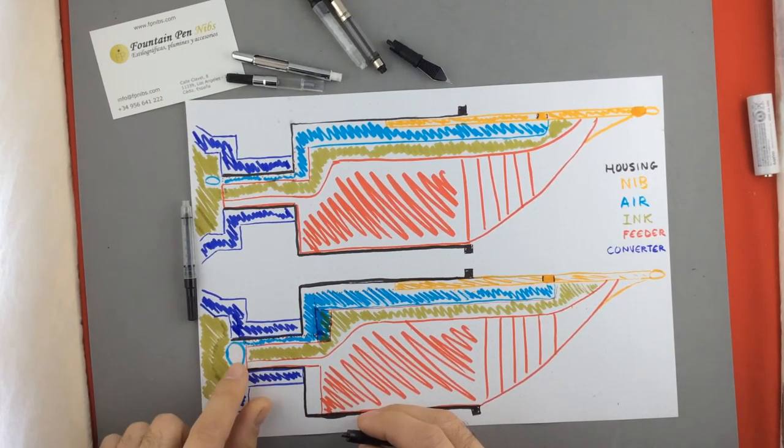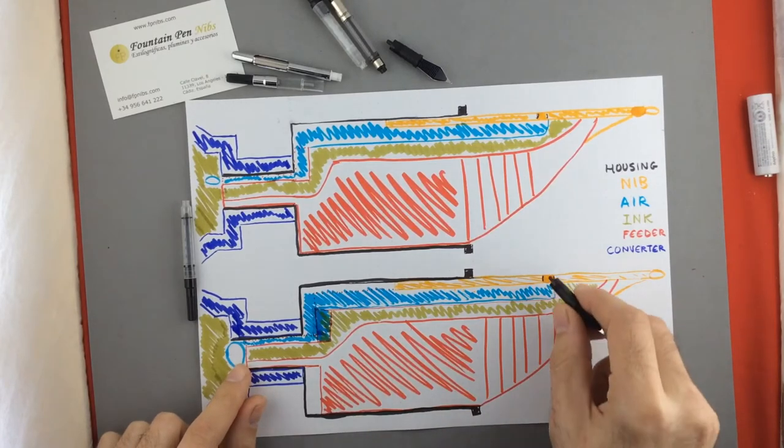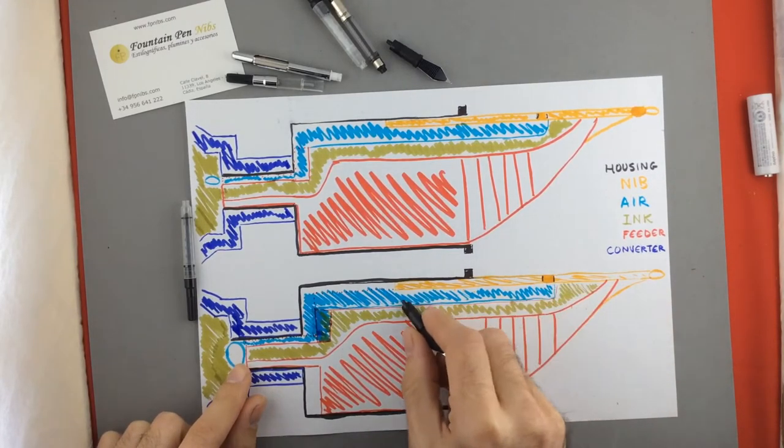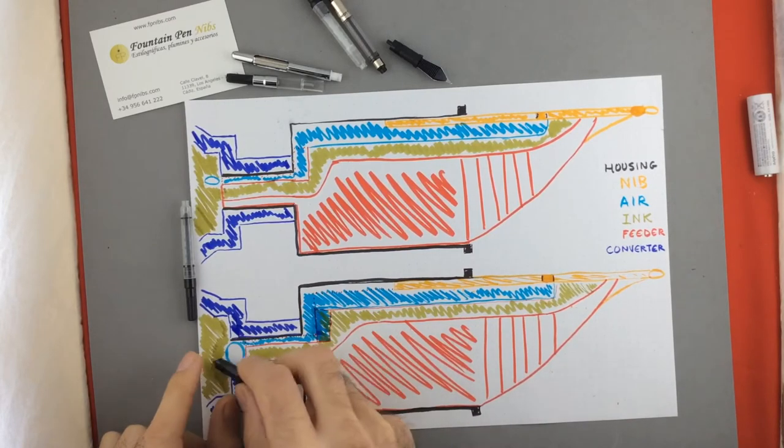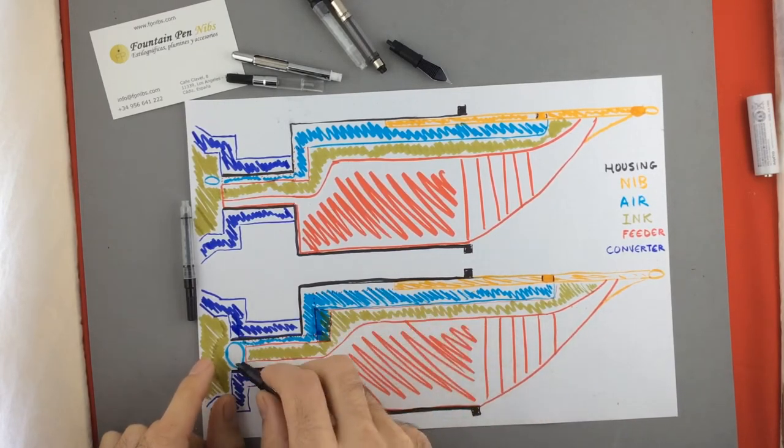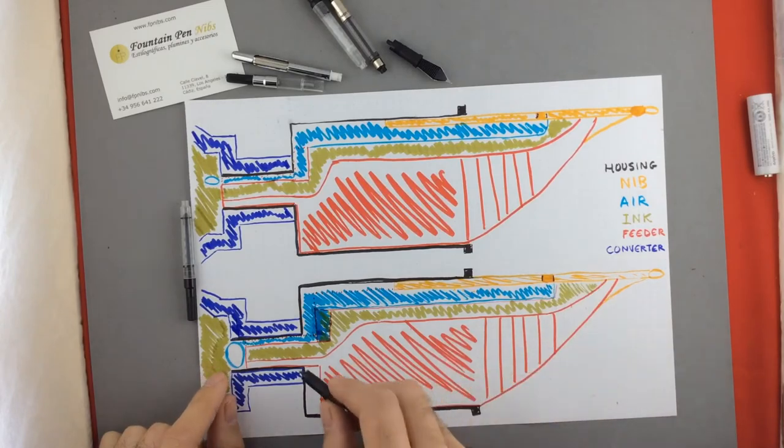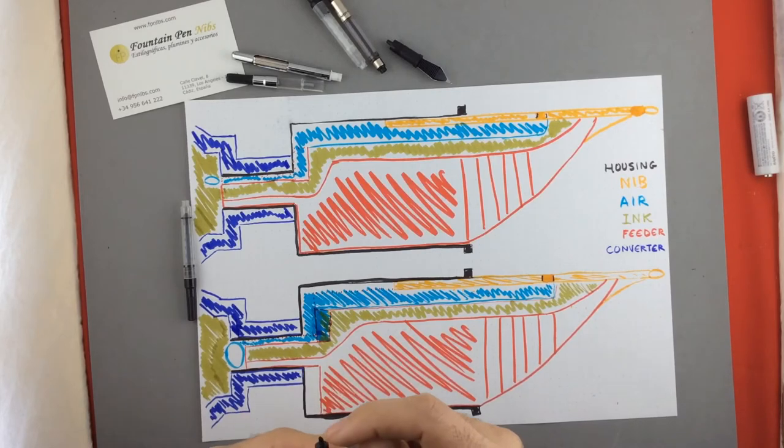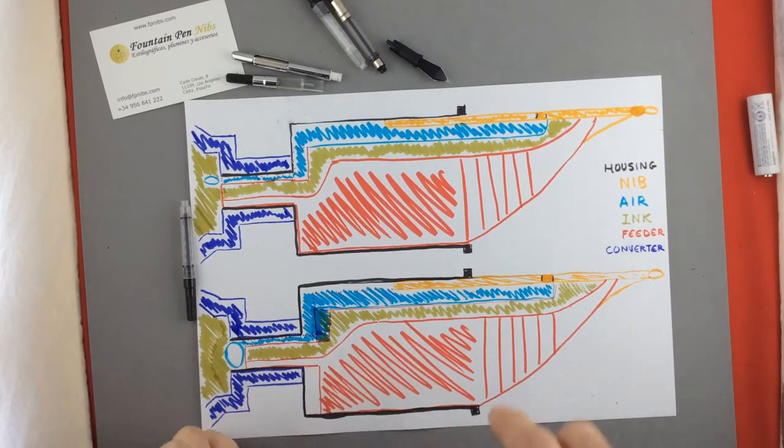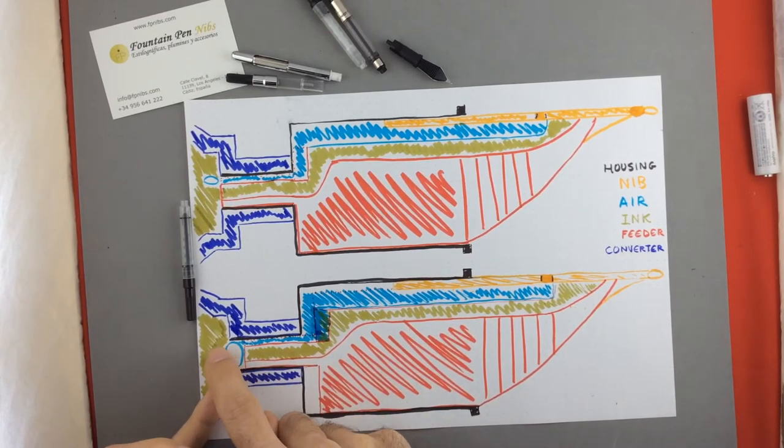So that may cause that the air that comes from outside to the reservoir, exchanging by ink, makes a little air bubble right in here because this little rod that the feeder has doesn't go all the way into the reservoir.